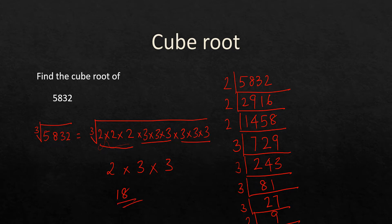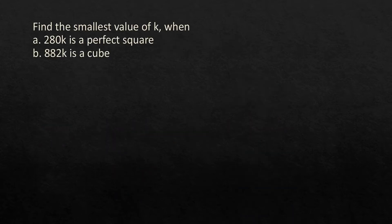Now this next question also uses prime factorization. Find the smallest value of k such that 280k is a perfect square. Remember: for a perfect square, all prime factors must appear in pairs.